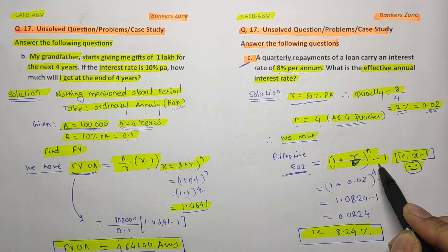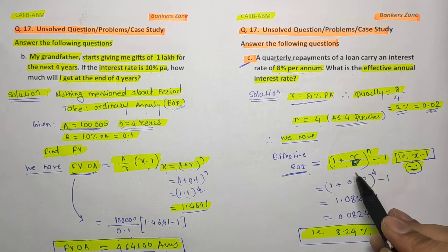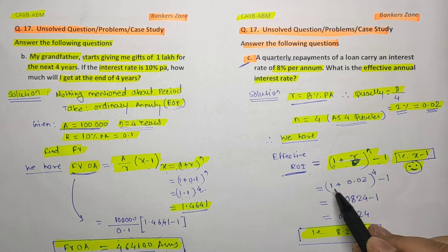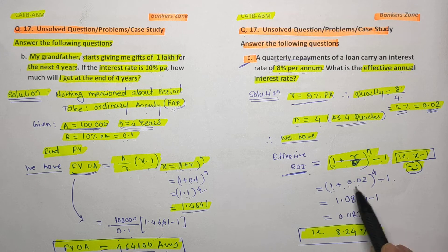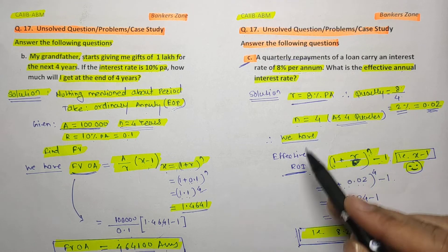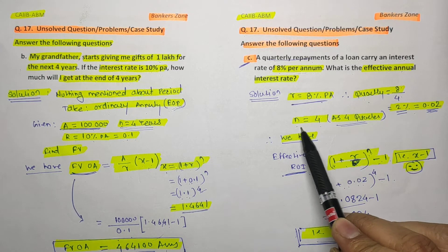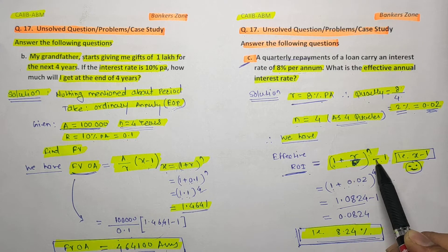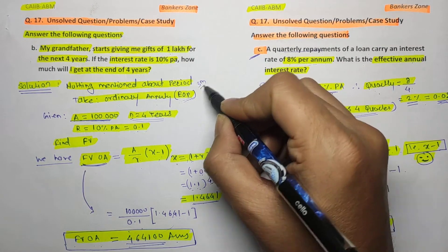The formula for effective rate of interest is: (1 + r)^n − 1, which is basically x − 1. Putting the values: 1 + 0.02 = 1.02 raised to power 4, minus 1. When calculated, 1.02 raised to power 4 gives 1.0824, so the effective annual interest rate is 8.24 percent. Remember: convert the per annum rate to quarterly form, take n as 4, and apply the formula. This is a common 2-mark question.